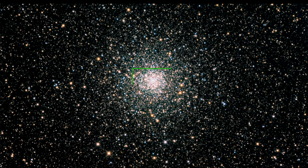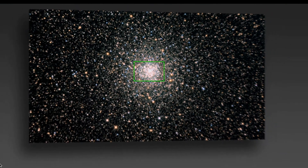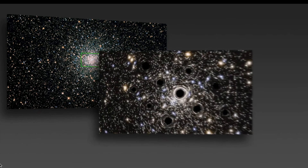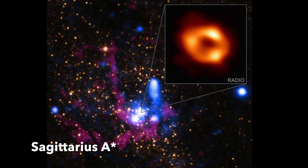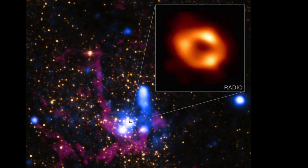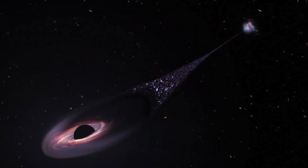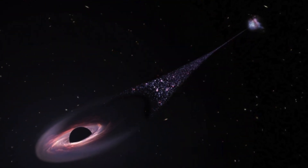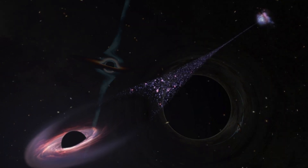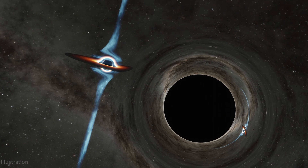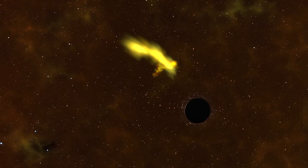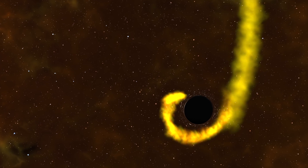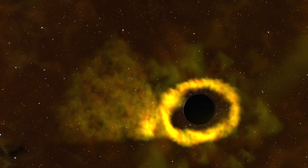It is estimated that the Milky Way alone hosts anywhere from 10 million to a billion black holes. Among them, the supermassive black hole Sagittarius A* at the galactic centre stands as the largest, possessing a mass equivalent of 4.3 million solar masses. Placing this beast at the centre of our solar system would be gravitationally catastrophic, as its event horizon would lie approximately 7 million miles from the centre, with an immense gravitational pull. Our sun, whose radius measures about 430,000 miles, is a mere speck.